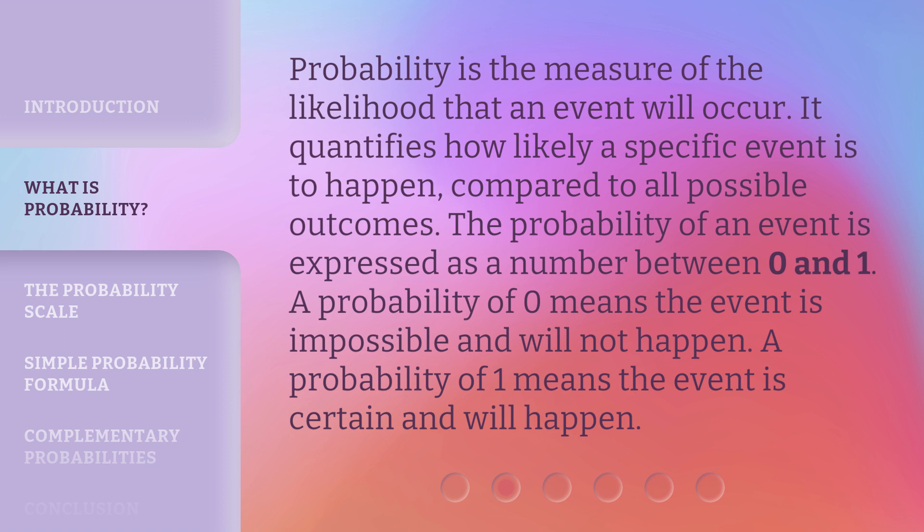The probability of an event is expressed as a number between 0 and 1. A probability of 0 means the event is impossible and will not happen. A probability of 1 means the event is certain and will happen.